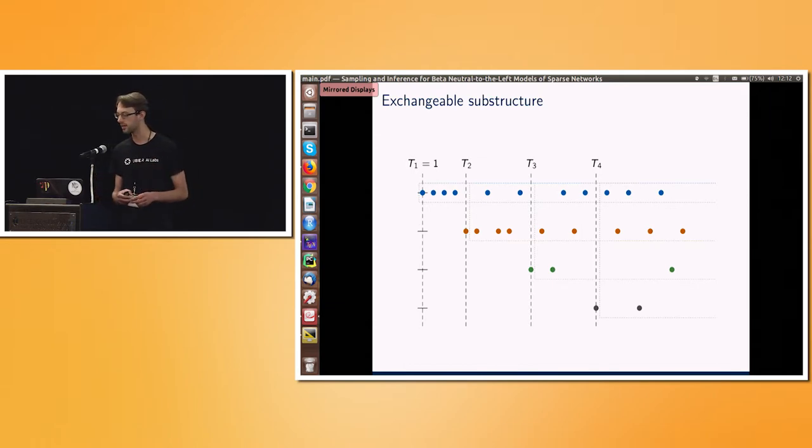And the exchangeable substructures here are given on this diagram. So those dots are the ends of edges, so each pair would give you an edge. And we have time across the top axis with those arrival times, the first time of seeing a new vertex. Now, if you look at this orange dashed line, hopefully that's visible, this says, look at all the points where we had to choose between either vertex 1 or vertex 2 after vertex 2 was available. Well, that's an exchangeable substructure, and it's these structures which are going to be very powerful in forming inference. And this is inherently linked to the left neutrality, which you might have guessed is important to beta-neutral to the left processes.